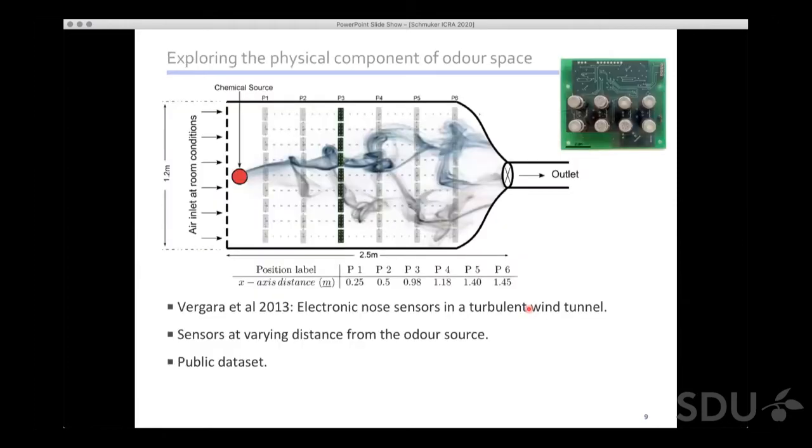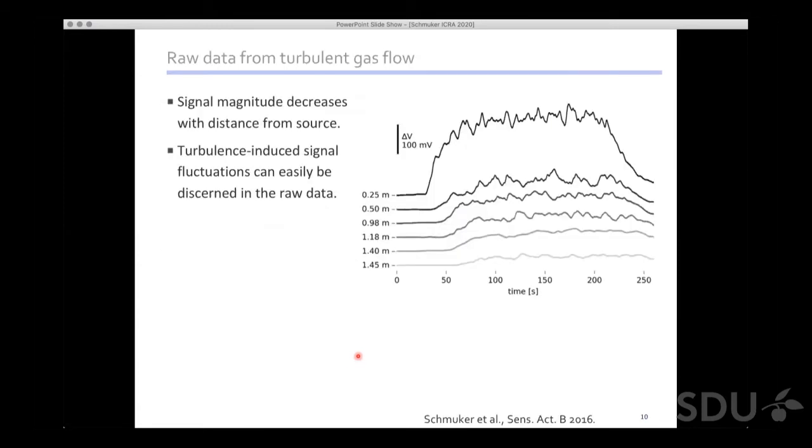The work I'm going to talk about has been collaborative work with Ramon Huerta at UC San Diego and Victor Bar at the University of Berlin. We use a dataset recorded by Ramon in a wind tunnel with gas sensors, e-nose boards located at various distances from the source. This was published by Gara et al 2013 and is one of the best and most widely used odorant datasets. When we look at the data, close to the source gas gets released and the signal increases, then there's fluctuation due to turbulence.